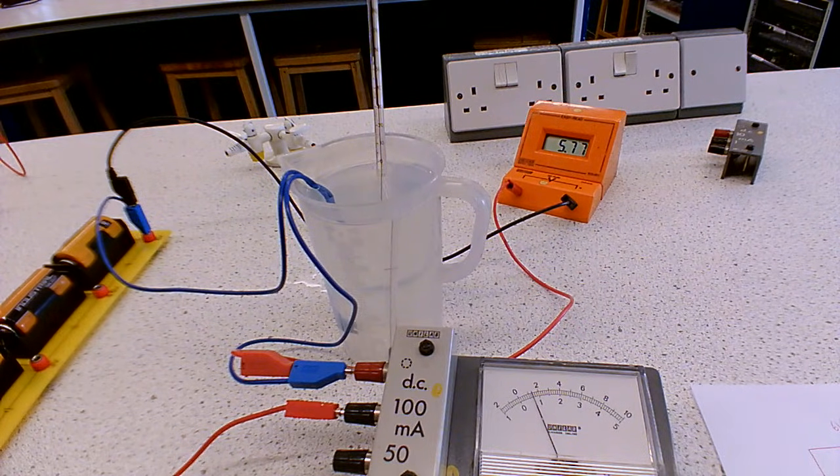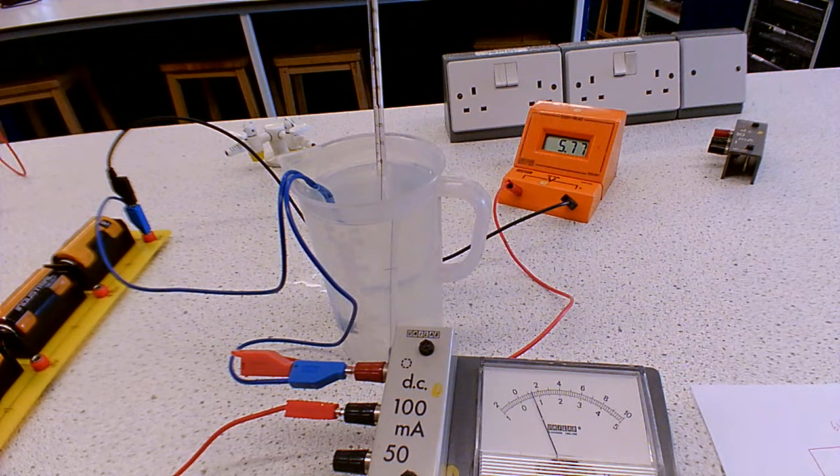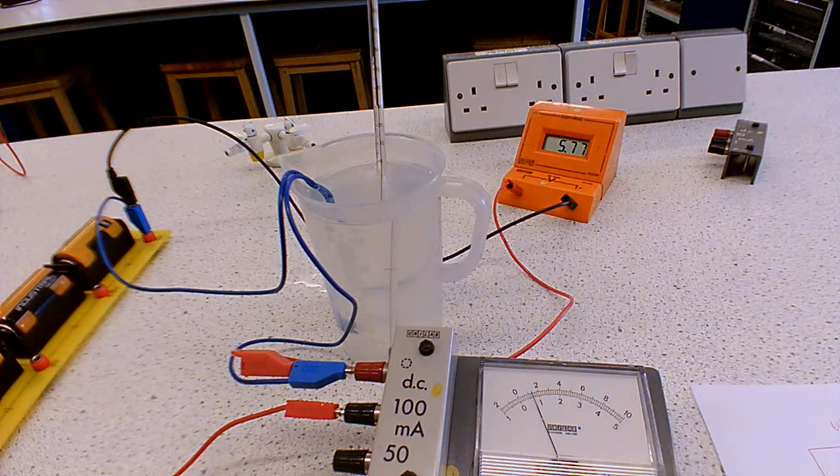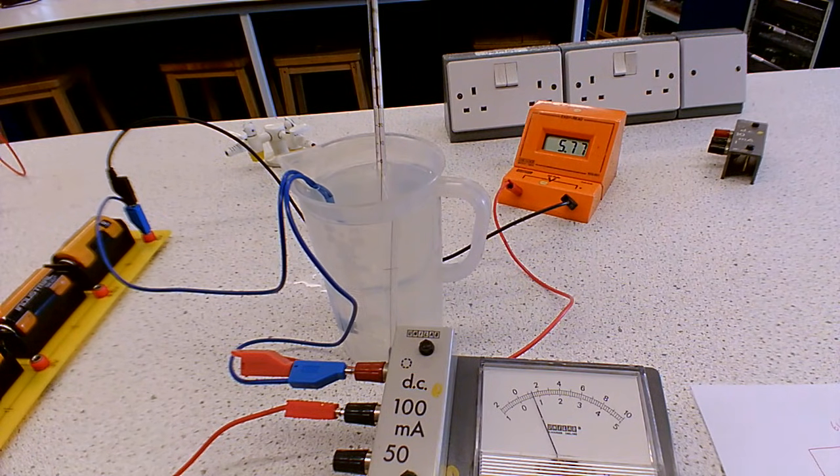All right, so that's dropped to 45 degrees, which is a bit nicer. It's a bit closer to 80 degrees as well, so we can see if there might be some sort of proportionality relationship. So our potential difference, you can see, is 5.77.